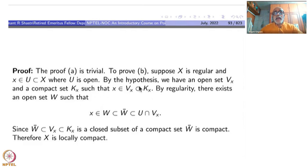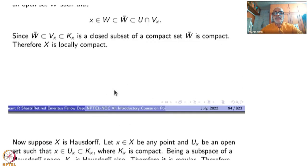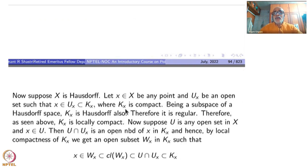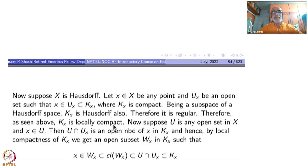We are done with one part of part (b). For the second part, instead of regularity we assume Hausdorffness. Start with a point x and an open set U_x containing x. Being a subspace of a Hausdorff space, K_x is also Hausdorff. Now K_x is compact and Hausdorff, therefore by our previous proposition it is regular. So K_x is regular, and therefore as seen above, K_x is locally compact. I am using the earlier part here so that I don't have to work too much again.